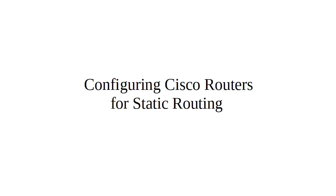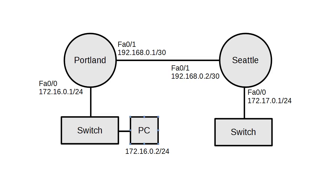Let's look at configuring Cisco routers with static routing. I have a network diagram with a PC configured at 172.16.0.2, connected to a switch, which is connected to my Portland router. Portland is 172.16.0.1.